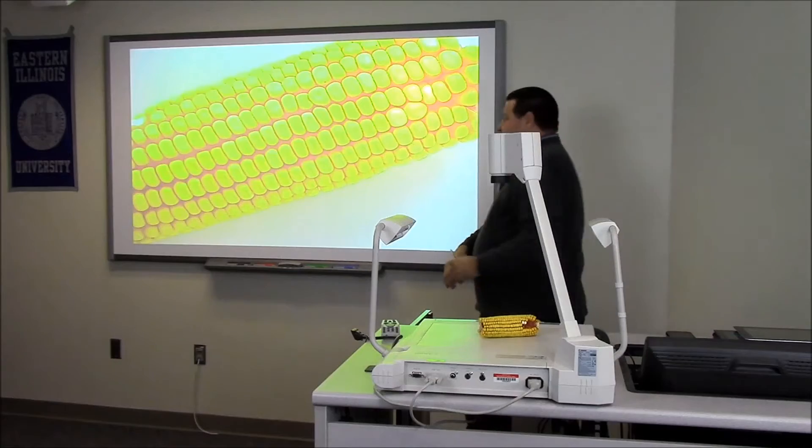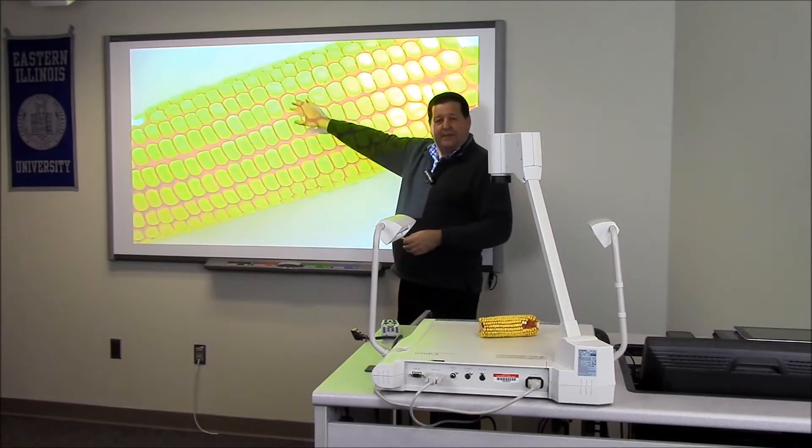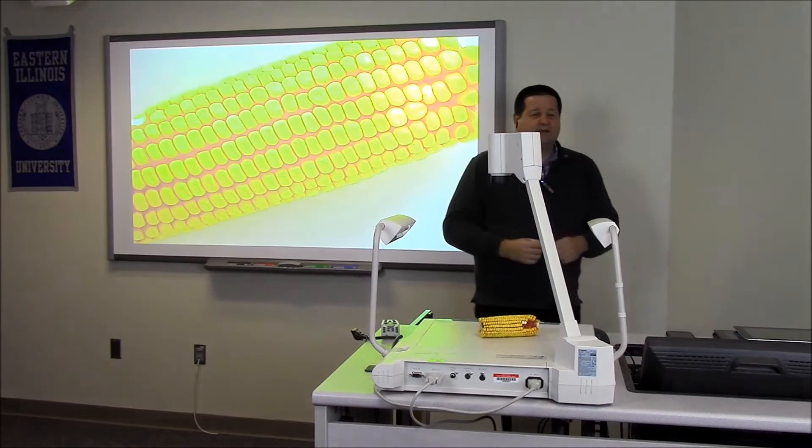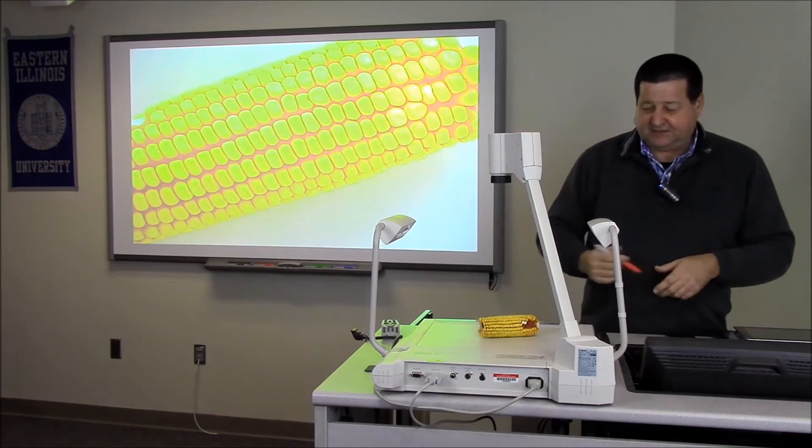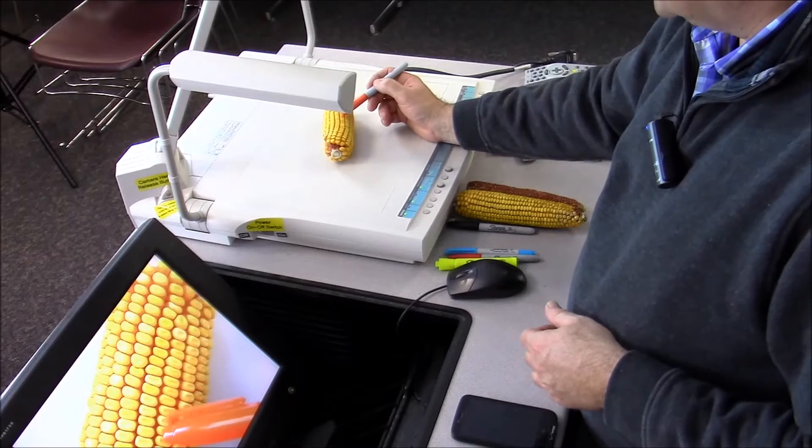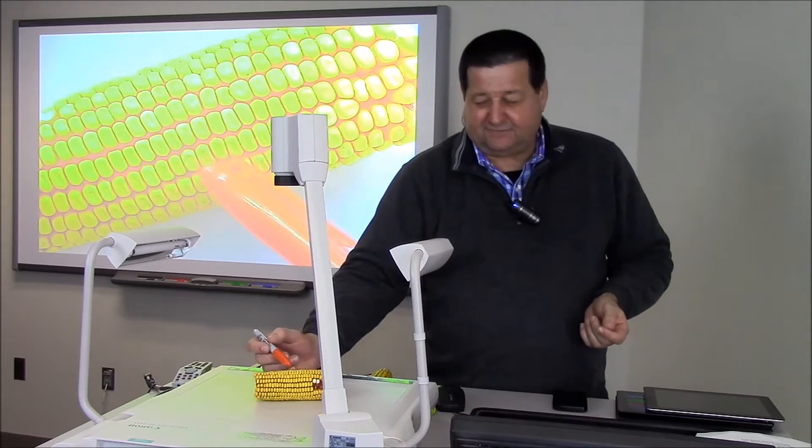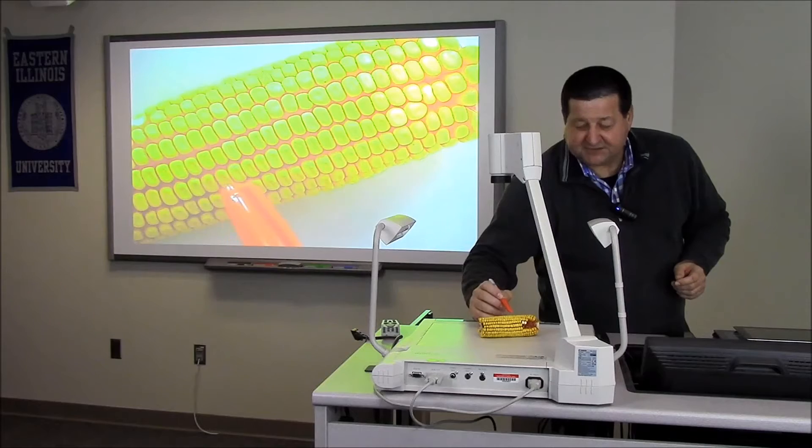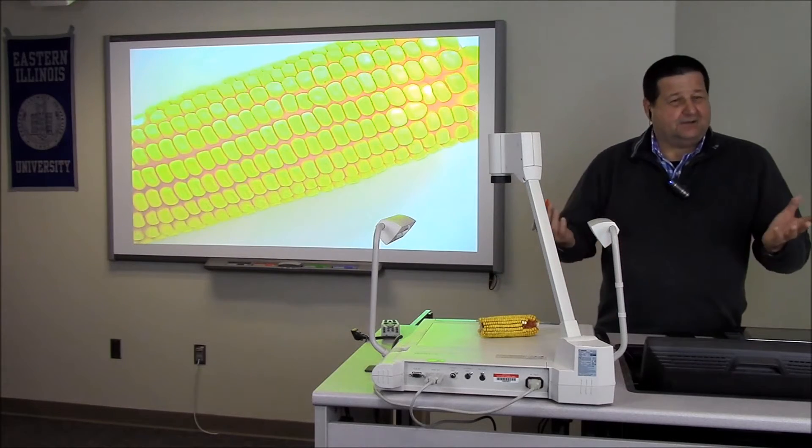In this case I could either do it here in front of the document camera or come up and point to whatever I want to draw the students' eye to. If you'll notice there's indentations on each one of these grains of corn and that's one way that farmers decide whether it's time for harvest or not. It's called denting.